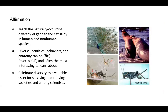The third part of the framework is affirmation, which means teaching the naturally occurring diversity of gender and sexuality in both human and non-human species. These are not aberrations or anomalies — diversity is a part of biology; it's all of biology, really. Diverse identities, behaviors, and anatomy can be considered fit in the context of evolution — successful, and often the most interesting to learn about.